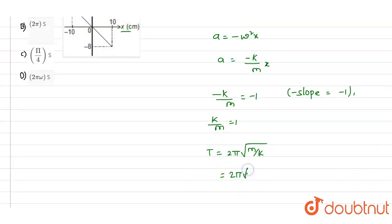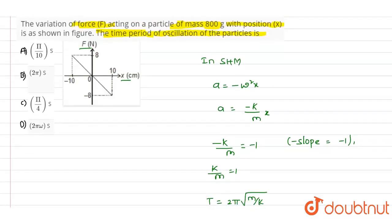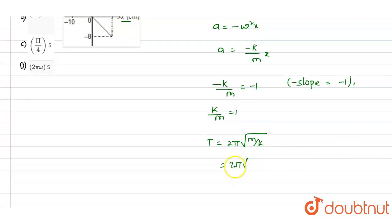So we will write 2 pi into under root of m is given as 800 grams, divided by 1, so that will be equals to 2 pi.